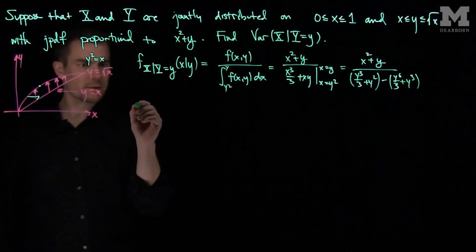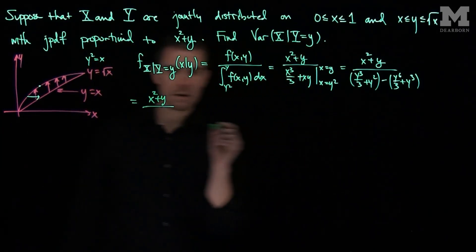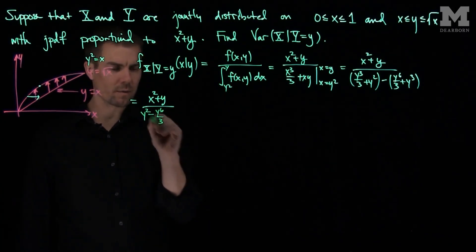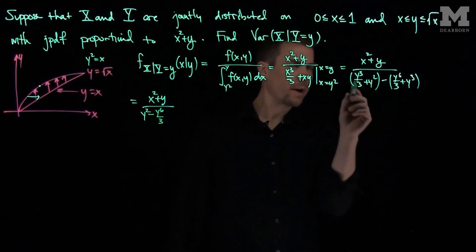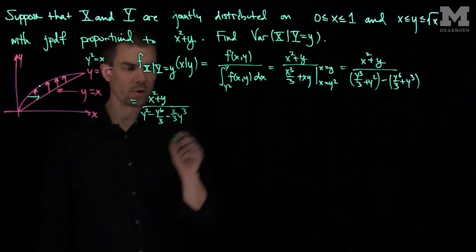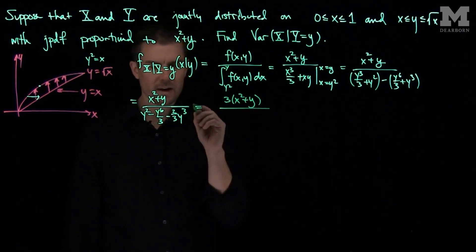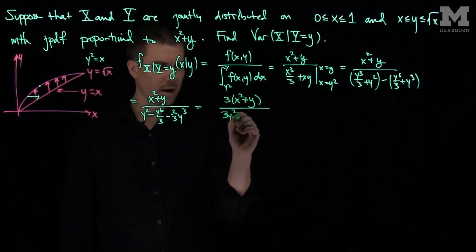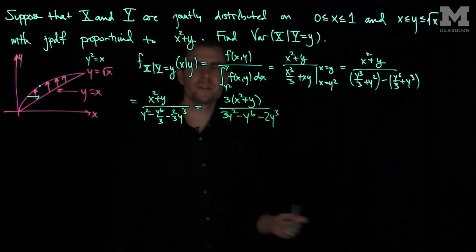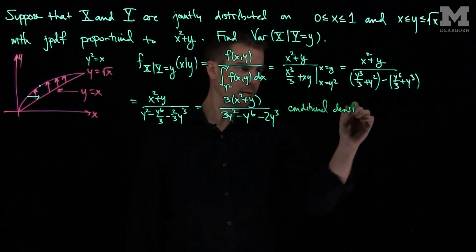Let's simplify. The numerator is x squared plus y over: we have y squared, minus y to the sixth over 3, minus y cubed plus y cubed over 3, which is minus two-thirds y cubed. Multiplying top and bottom by 3, this is 3(x squared plus y) divided by 3y squared minus y to the sixth minus 2y cubed. And this is our conditional density function.